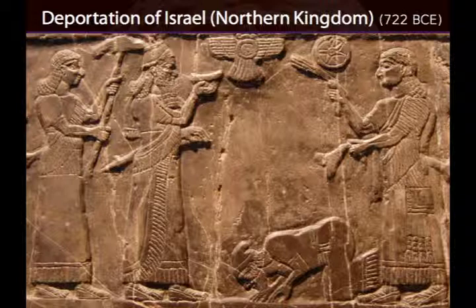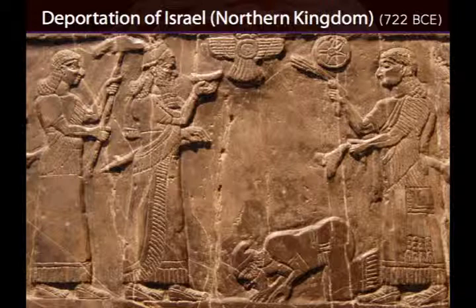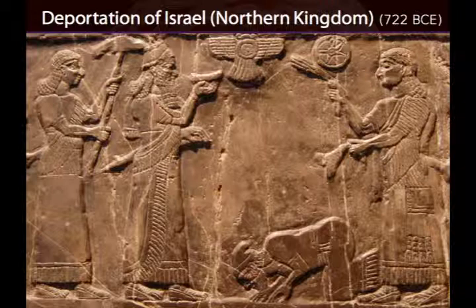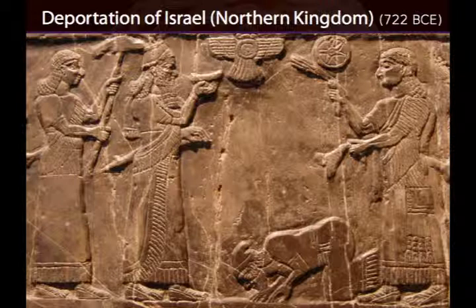The peoples the Assyrians rule over who seem most in danger of failing to surrender their identity end up having their key cities destroyed, or — as happens to the northern kingdom of Israel — the bulk of their population is deported entirely. The people of northern Israel are seen as too much of a threat to rule over, so the Assyrians deport them into Mesopotamia and disperse them. They are submerged and assimilated into Mesopotamian culture and society, and they vanish — they are lost. These are the famous 'Lost Tribes.'